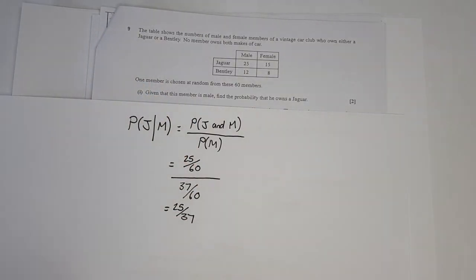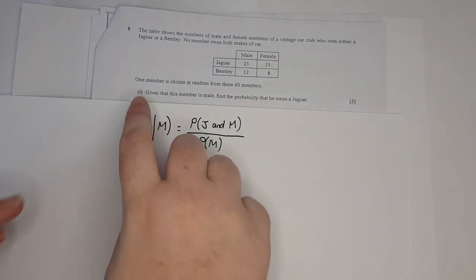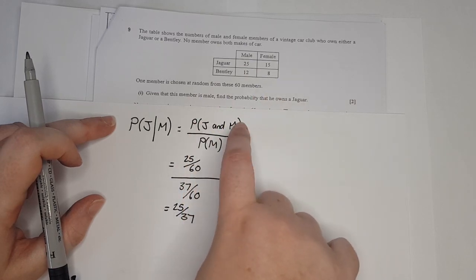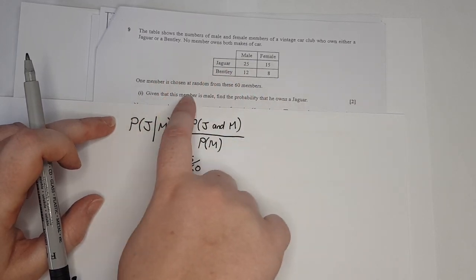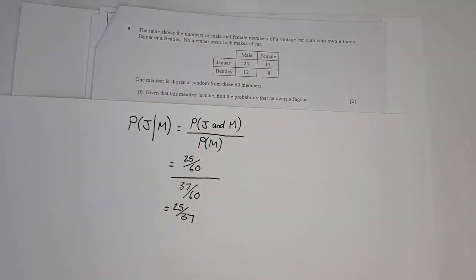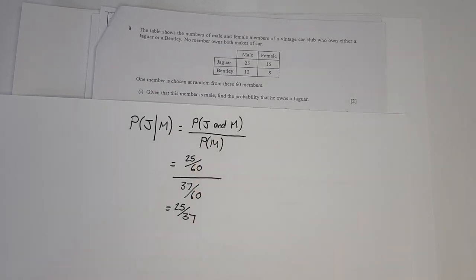When looking at conditional probability, remember: the numerator is both events together, and the denominator is the 'given that' event alone — but it must include all possible options for that given-that probability, not just one part of it.